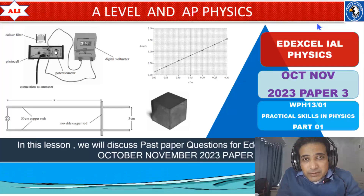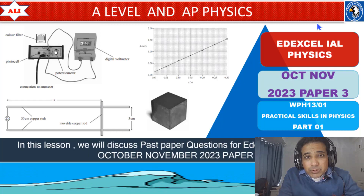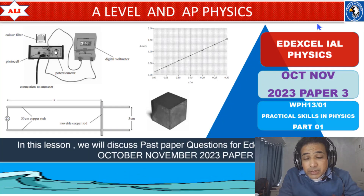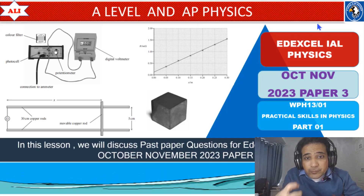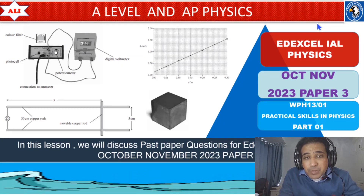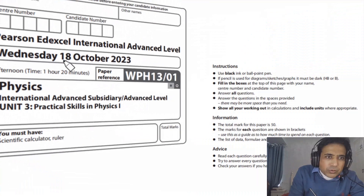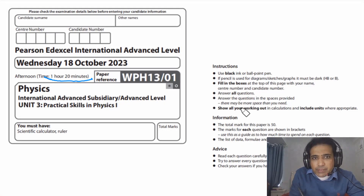Welcome to A Level and AP Physics. In today's lesson we will discuss past paper questions from October/November 2020 theory paper. We will discuss these questions in detail so you can improve your understanding of practical skills in physics. Total time for this exam is 1 hour and 20 minutes, you need to answer all questions, and the total mark for this paper is 50.